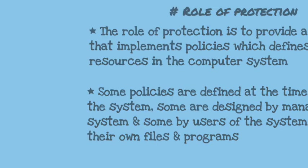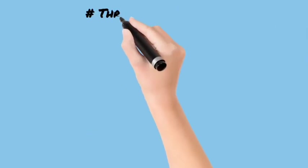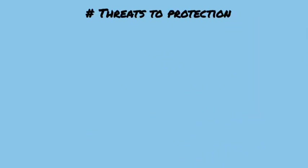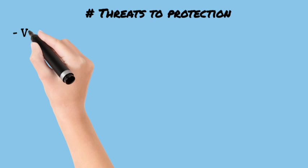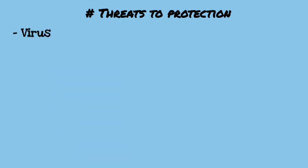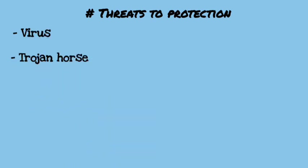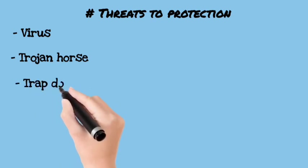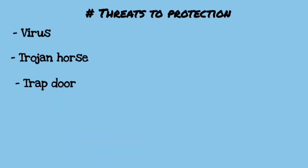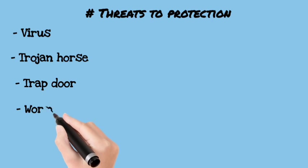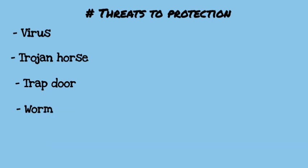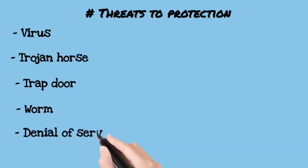Now we will see threats to protection: that is the virus, Trojan horse, trap door, worm, and denial of service. If you want to understand them — the worm, Trojan horse, viruses — you can easily understand them as I have explained them before according to protection.